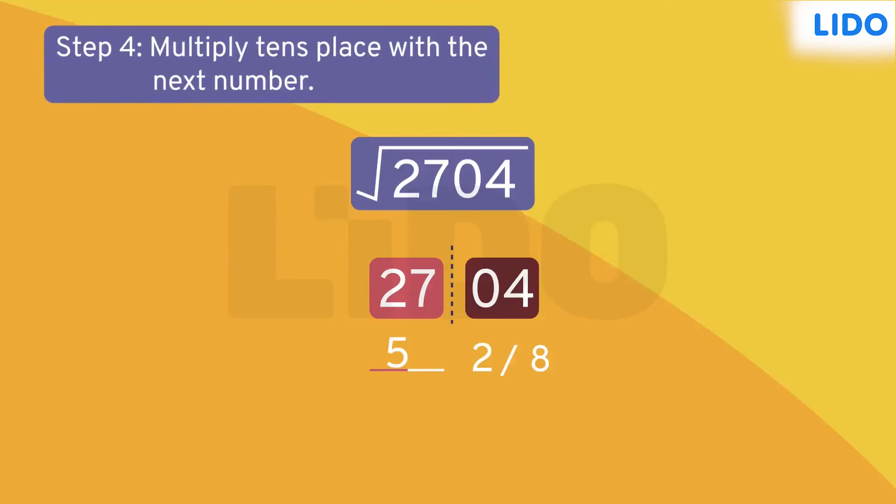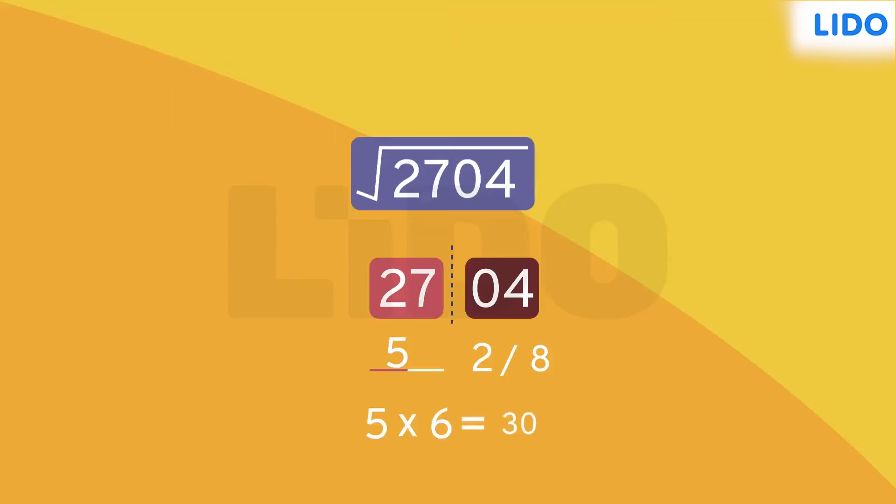The next step is to multiply the first part which is 5 with the immediate next number. 5 when multiplied with the immediate next number that is 6 gives the product as 30.